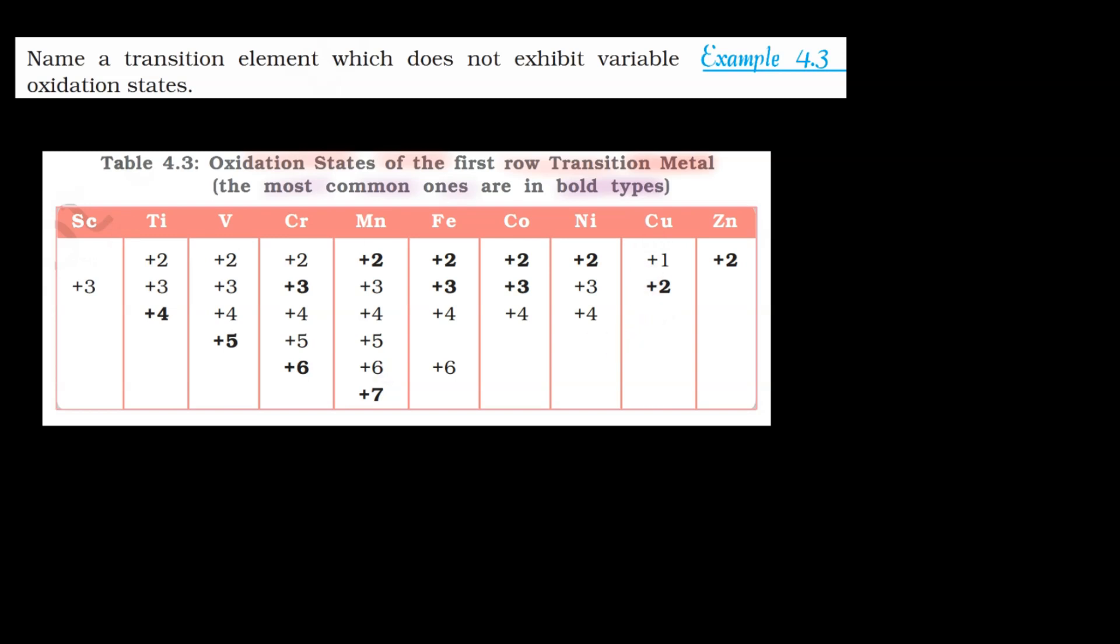To yahan se hum dekhkar bata paenge ki ye jo hai beta, scandium, ye sirf aur sirf oxidation state show karta hai plus 3, matlab ye variable oxidation state show nahi karta.